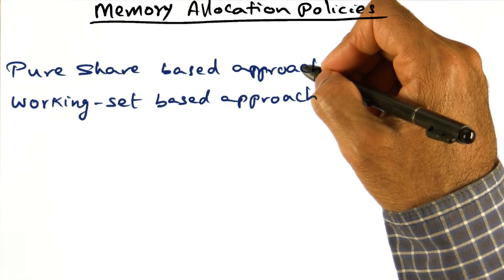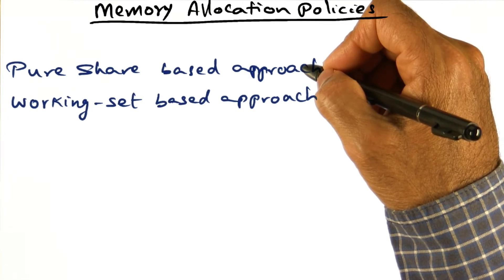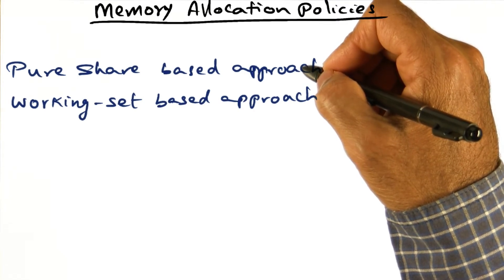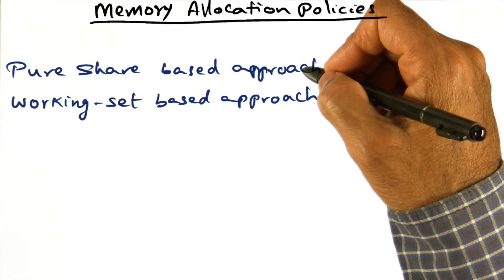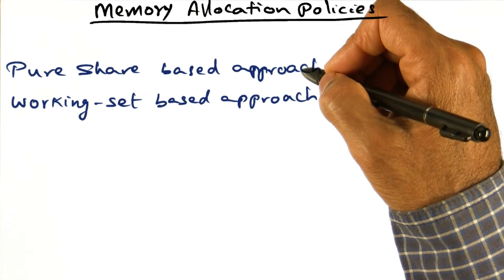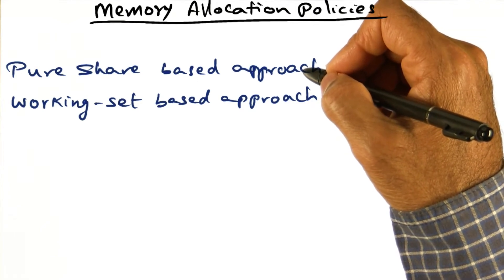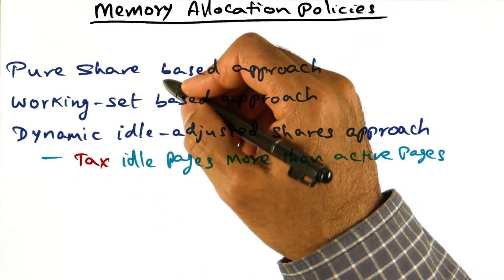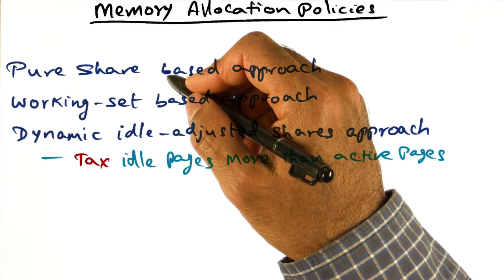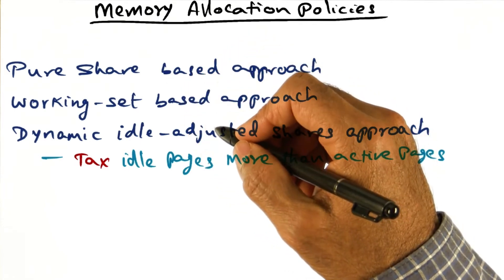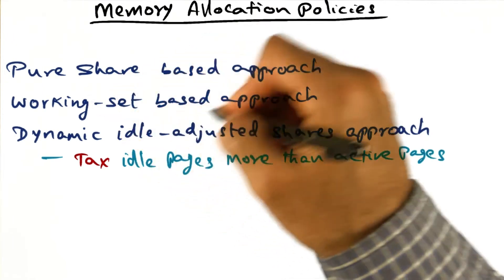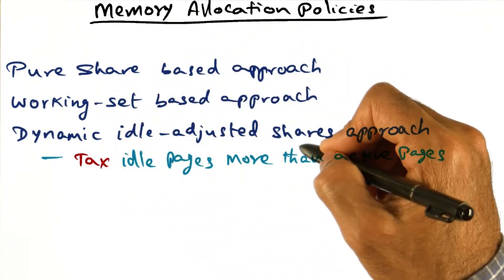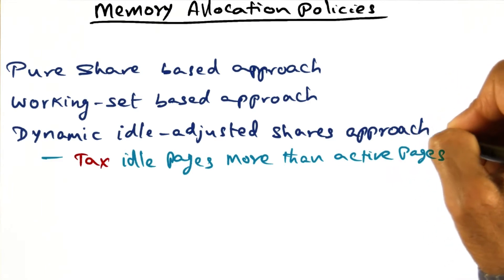If a virtual machine gets a bunch of resources and is not really using it, it's just wasting them. The desired behavior is: if the working set of a virtual machine goes up, you give it more memory; if its working set shrinks, you get back the memory so you can give it to somebody else. A working set-based approach would be the saner approach. But at the same time, if I paid money, I need my resources — so one thing that can be done is put these two ideas together in implementing a dynamic, idle-adjusted shares approach.